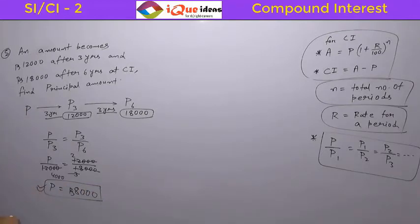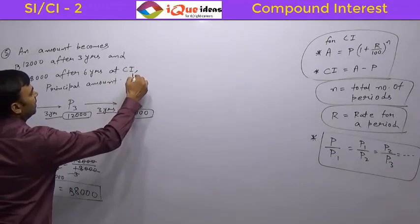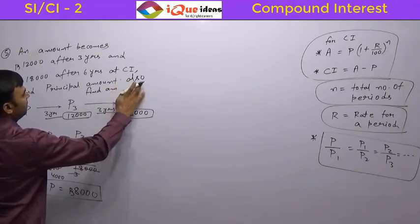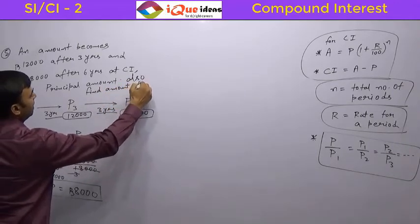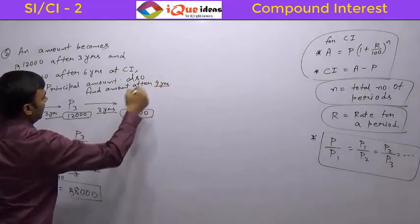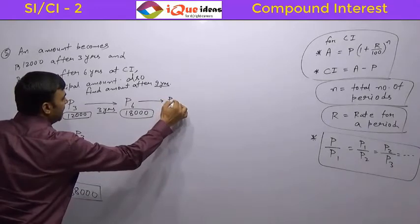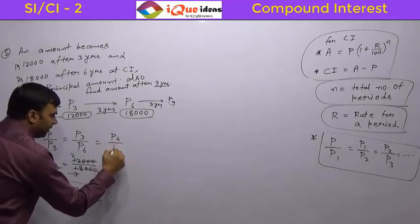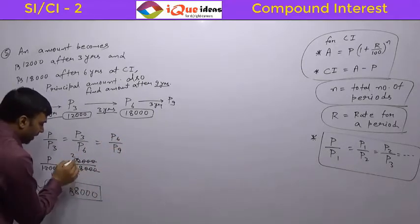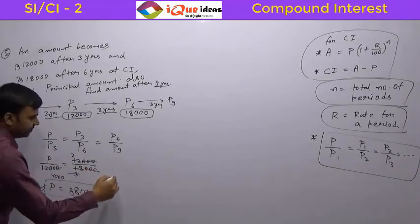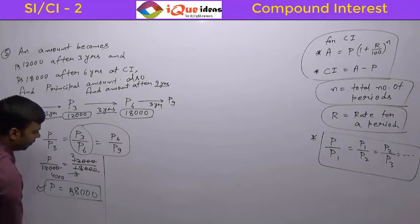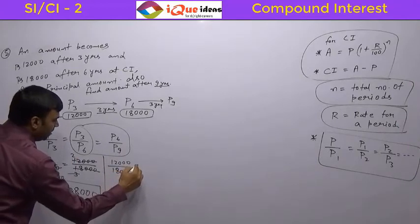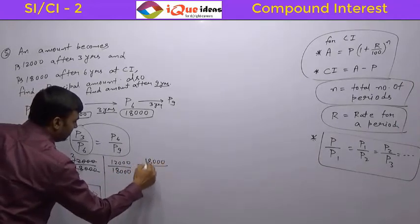That is our answer. Now let us also find the amount after 9 years. From P6 to P9 it is 3 more years, so the same ratio holds: P upon P3 equals P3 upon P6 equals P6 upon P9. We can use this to calculate P9. P3 is 12,000 and P6 is 18,000 equals 18,000 divided by P9.